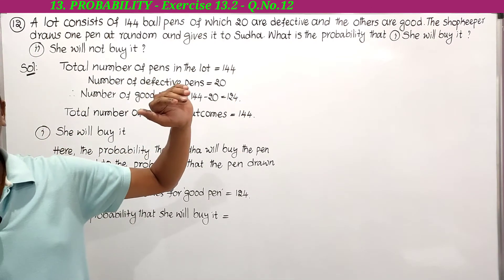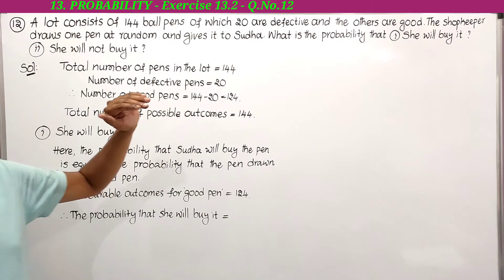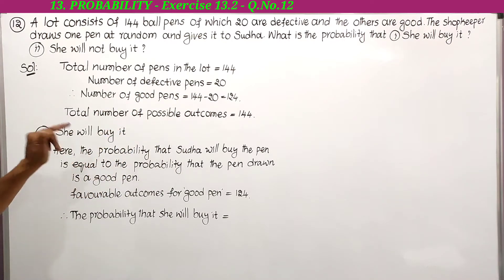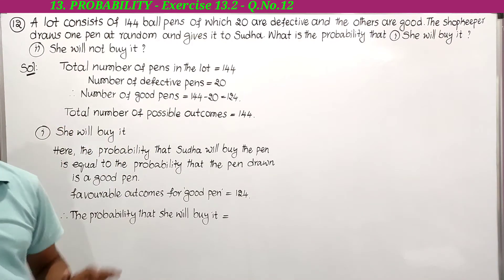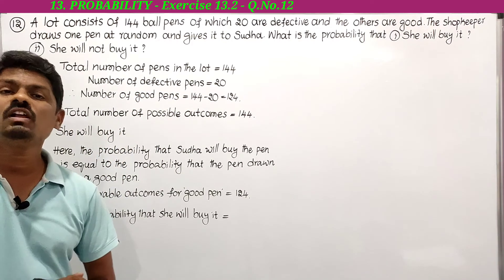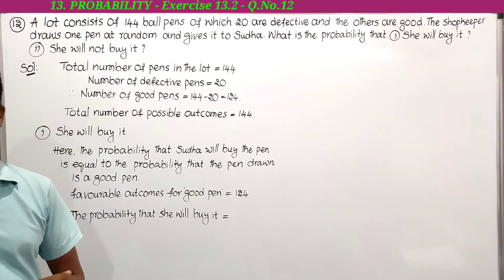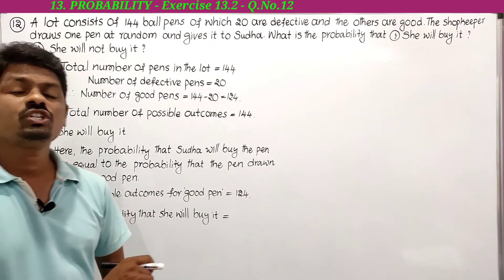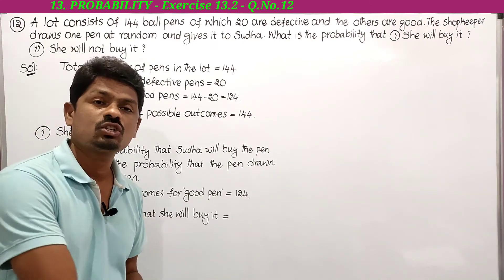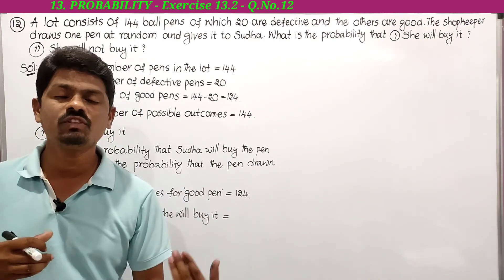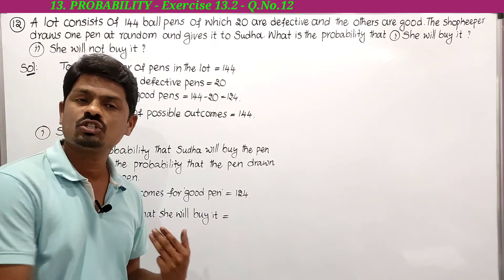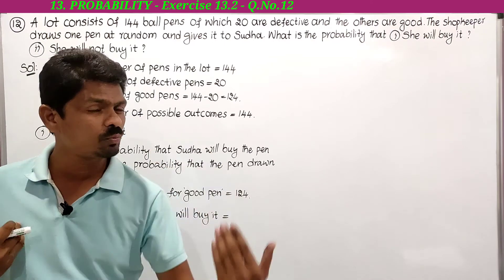First one: what is the probability that Suda will buy the pen? She will buy it when the pen drawn by the shopkeeper is a good pen — only if the pen drawn is a good pen will she buy it.